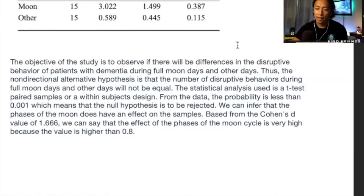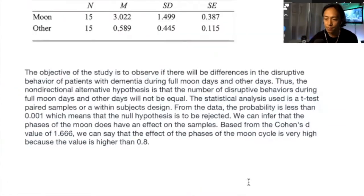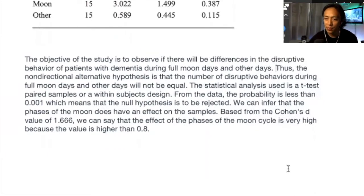All right, that sounds fine. Next, the next part is, I told you to write alternative hypothesis. So let's see what the student said here. Thus, the non-directional alternative hypothesis is that the number of disruptive behaviors during full moon days and other days will not be equal. Okay, so one, I specifically said that the hypothesis should be directional.